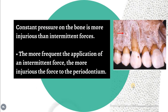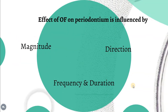Regarding frequency and duration, constant pressure on the bone is more injurious than intermittent force. The more frequent the application of an intermittent force, the more injurious the force to the periodontium. So constant pressure or multiple intermittent forces on an area will lead to injury. These are the factors affecting occlusal force on the periodontium.